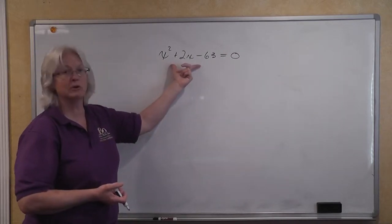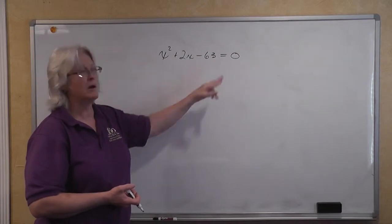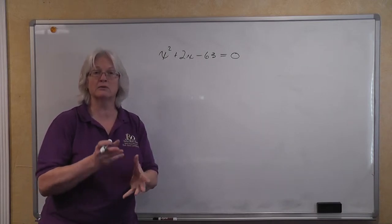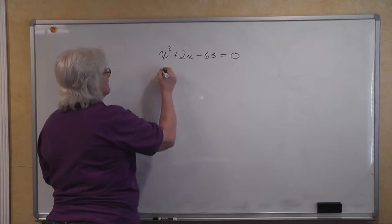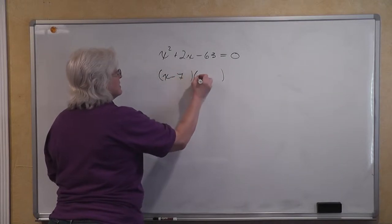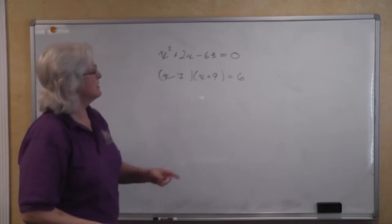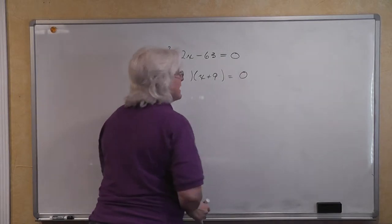We've learned factoring quadratics by inspection. We're looking for two numbers whose product equals negative 63 and whose sum equals positive 2. We've had lots of practice on factoring — this is not a video on factoring. There are two factors of 63 that give us a sum of positive 2, so we factor and get x minus 7 times x plus 9 equal to zero — because 7 times 9 equals 63.